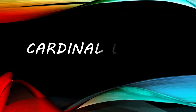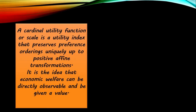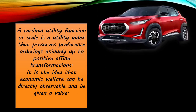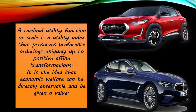The first one is the cardinal approach, or cardinal utility. Cardinal utility postulates that utility can be measured — it is the idea that economic welfare can be directly observed and given a value. For example, if a Nissan car gives 5,000 units of utility and a BMW gives 8,000 units, then the BMW is better than the Nissan car.